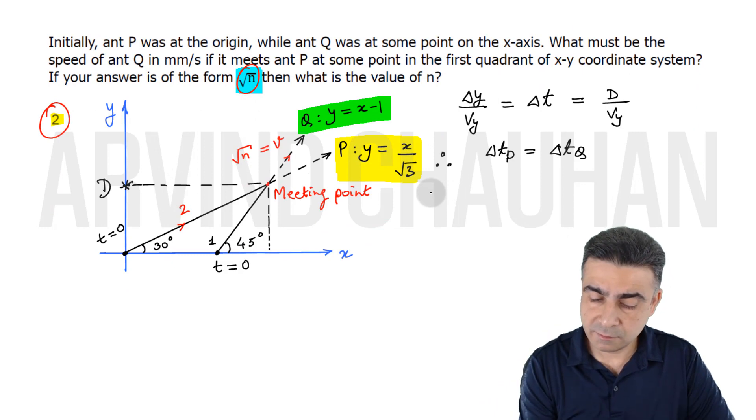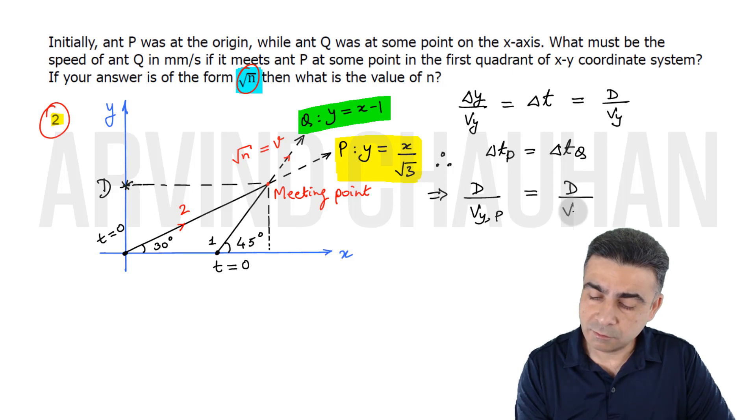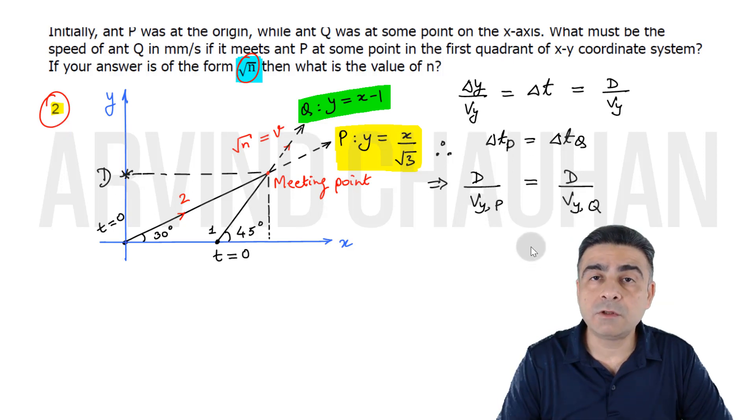This gives us capital D over the y-component of velocity of ant P equals capital D over the y-component of velocity of ant Q.